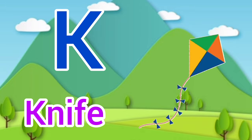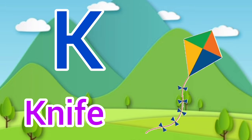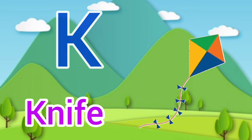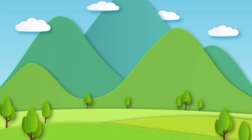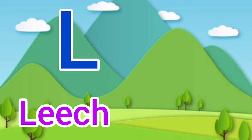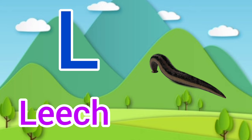K for kite, kite means patang. L for leech, leech means jog.